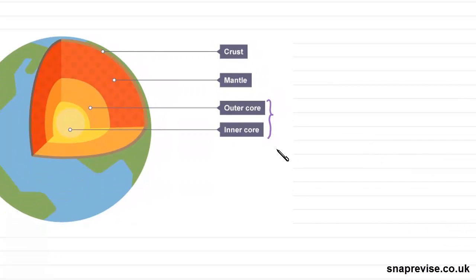Starting with the core, the core is made of dense rock, and these include iron and nickel. The inner core is solid, but the outer core is actually molten.